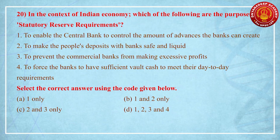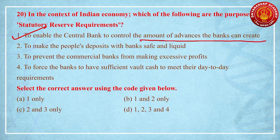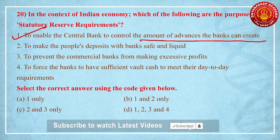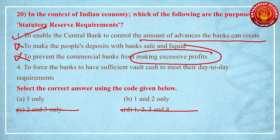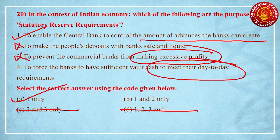Question number 20: in the context of the Indian economy, which of the following are the purposes of statutory reserve requirements — similar to CRR? First option: it enables the central bank to control the amount of advances banks can create — correct. Second option: it makes people's deposits with banks safe and liquid — not correct. Third option: to prevent commercial banks from making excess profit — no, the Reserve Bank of India nowhere prevents commercial banks from making excessive profit, as it is against the principle of economic rationality. Fourth option: to force banks to have sufficient cash — no such provision is given. So the correct answer is the first option only.